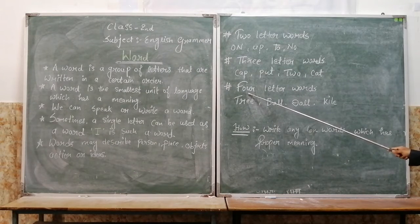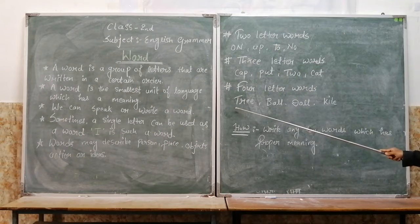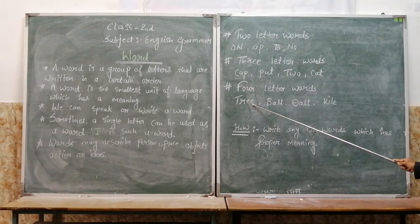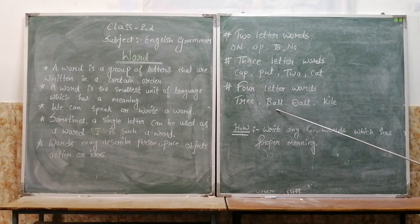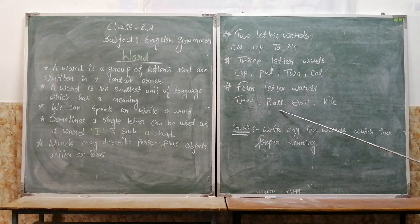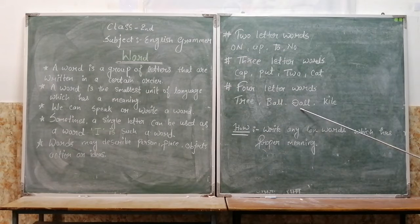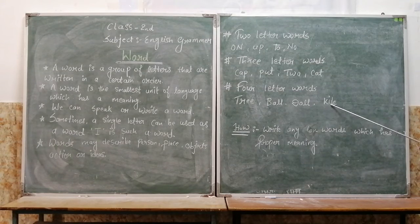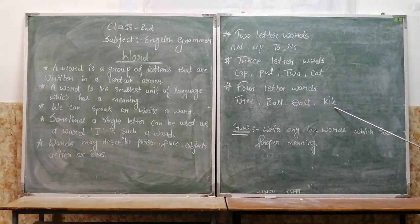Now we are going to learn about four-letter words. T-R-E-E, 'tree' — T is the first letter, R is the second, E is the third, and E is the fourth letter. B-A-L-L, 'ball' — B is the first letter, A is the second, L is the third, and L is the fourth letter. D-O-L-L, 'doll' — D is the first, O is the second, L is the third, and L is the fourth letter. K-I-T-E, 'kite' — K is the first letter, I is the second, T is the third, and E is the fourth letter.